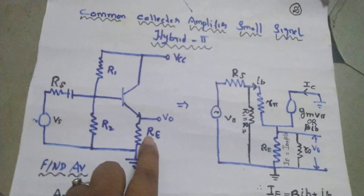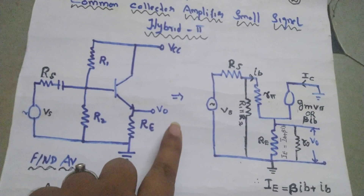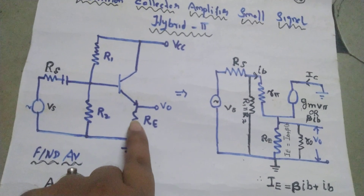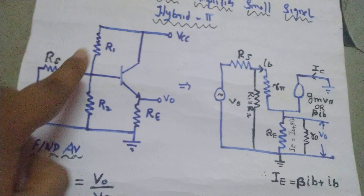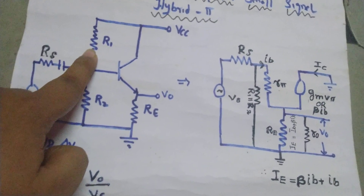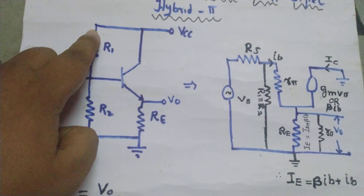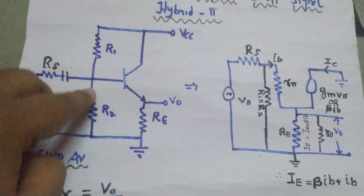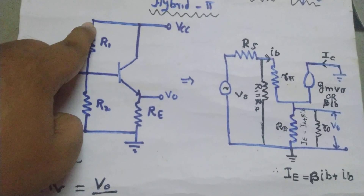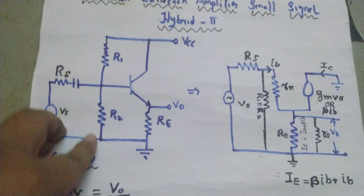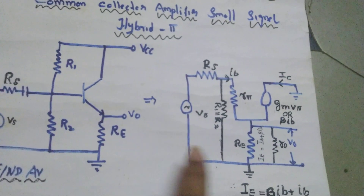The difference between small r-naught and capital R-naught is: small r-naught is the resistance within the device, while capital R-naught is the resistance external to the device. Now, whatever element is connected to the supply is disconnected from the supply and connected to the ground terminal. So R1, which was connected to the supply, is now connected to ground, making R1 and R2 parallel.